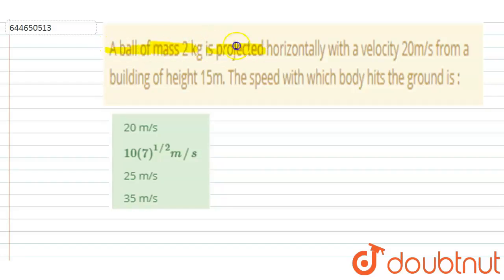Hello everyone. A ball of mass 2 kg is projected horizontally with a velocity of 20 meter per second from a building of height 15 meter. The speed with which the ball hits the ground. So if you see here, the ball was projected horizontally.